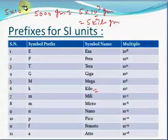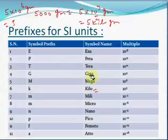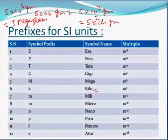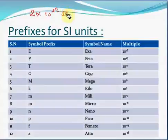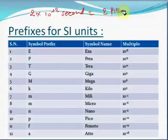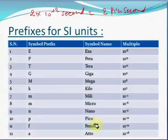Similarly, 5 x 10 to the power 6 grams can be written as 5 megagram. For example, 2 x 10 to the power minus 12 seconds can be written as 2 picosecond, as the prefix for 10 to the power minus 12 is pico.